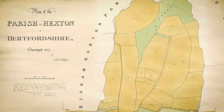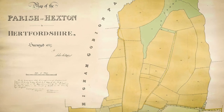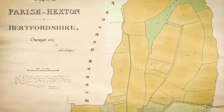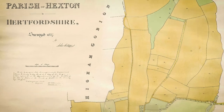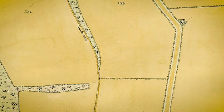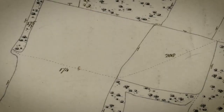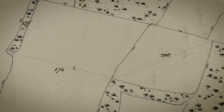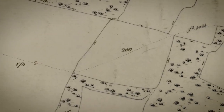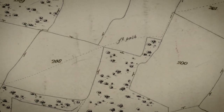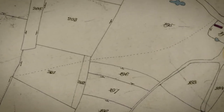You do sometimes find footpaths and bridleways on tithe records. On this example of Hexton in Hertfordshire, we can see a bridle road labelled on the tithe map, and if we go to the apportionment record, it also says 'bridle road.' Footpaths are also shown on the map. This one of Sandon in Hertfordshire shows a footpath crossing land parcels 174, 208, 207, 201, and 195.